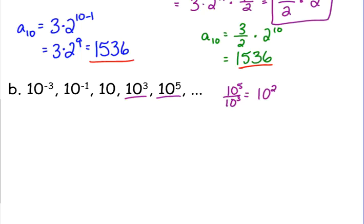So that's 10 squared or 100 for our common ratio. So anytime you can't quite figure out what it is, that's a method. Any two consecutive terms will help you figure out the common ratio.